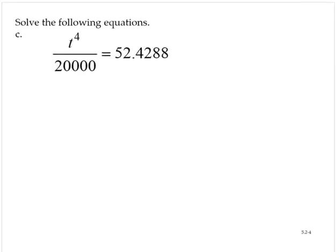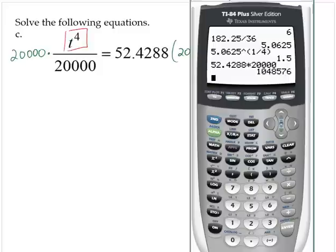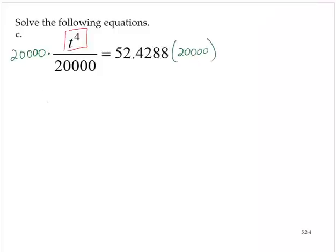Solve the equation. T to the fourth divided by 20,000 is equal to 52.4288. Again, I want to isolate the t to the fourth. And right now, it's being divided by 20,000. So I will multiply by 20,000 on both sides. Calculate that. 52.4288. Multiply that by 20,000. So 1,048,576. So t to the fourth.